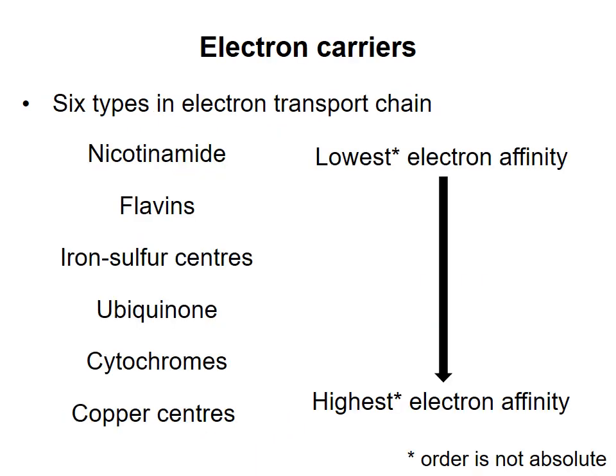The electron transport chain contains six types of cofactors listed here in approximate order of increasing electron affinity. Note that this ordering is generally correct, but is not always true. The electron affinity of a cofactor is not absolute, but can be affected by the protein environment in which the cofactor is bound. Therefore, it's possible for a specific iron-sulfur center to have a greater electron affinity than a specific ubiquinone molecule, for example. But this order does generally hold.